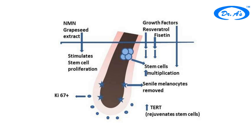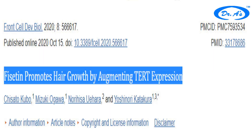Fisetin can kill these senescent cells or turn them into normal cells — that is what a senolytic does. Now, fisetin is a senolytic. Looking at the research, we can see that fisetin promotes hair growth by augmenting TERT expression. They also suggest that these polyphenols activate the transition from telogen to anagen — telogen being the resting phase and anagen being the growth phase.